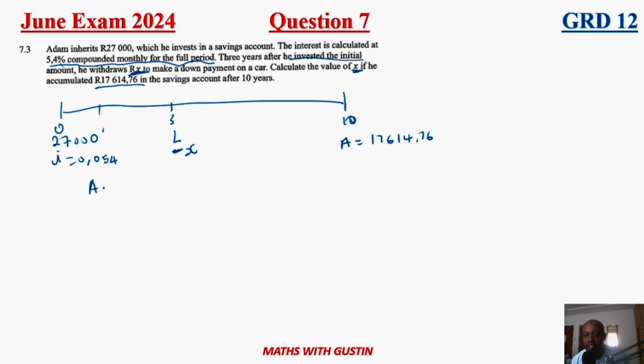Now let's go ahead and calculate this amount. This is the formula that we are going to use, the compound formula. Initially, they are saying at the end of 10 years, he had 17,614.76, which is equal to the initial deposit of 27,000 with our interest rate compounded.